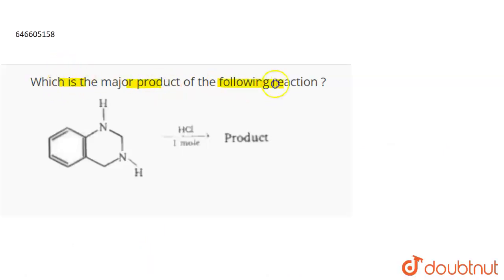So this is the reaction that is getting carried out. This is the compound that is given to you. You have a benzene ring here, then we have a six-membered ring in which we have NH here and NH here, and one mole of HCl is added. So you have to determine what will be the product formed in this reaction.